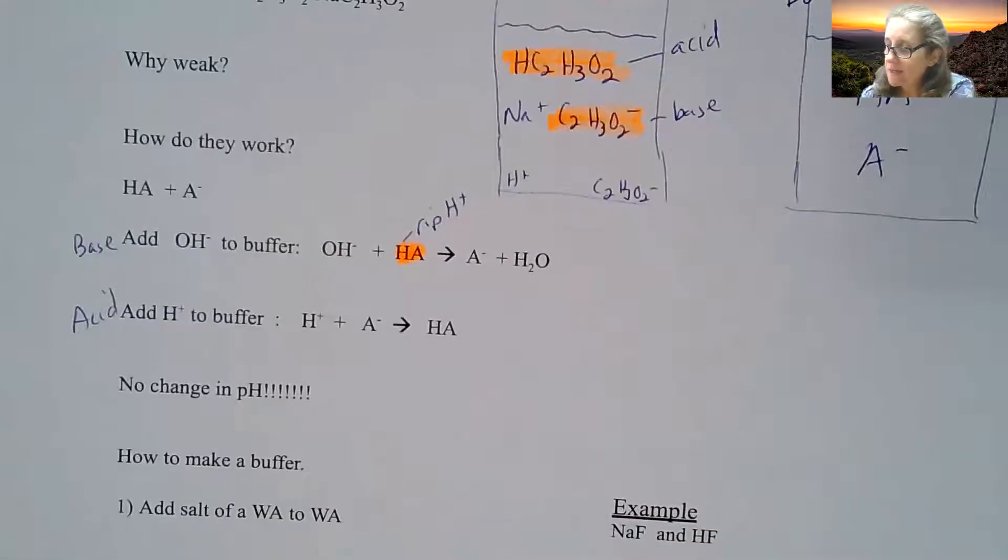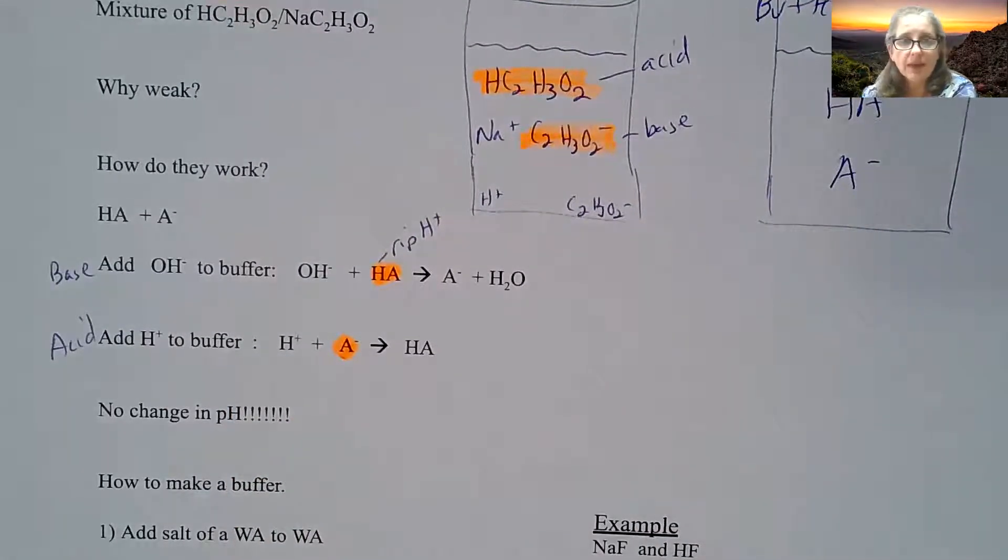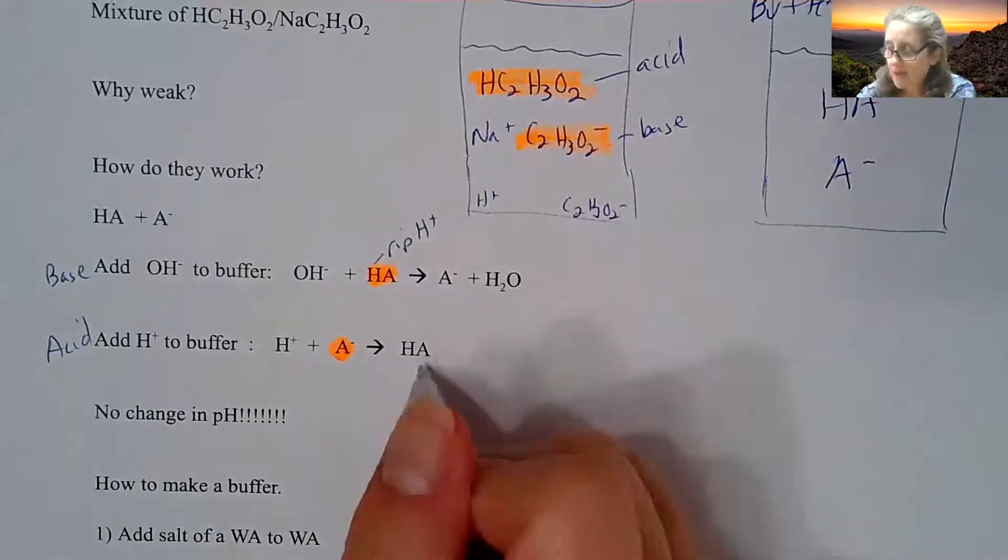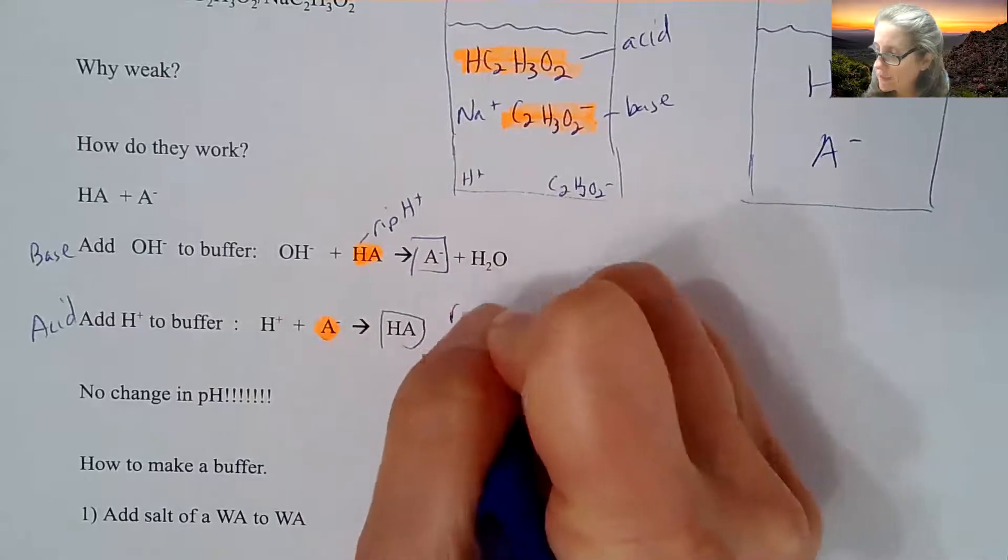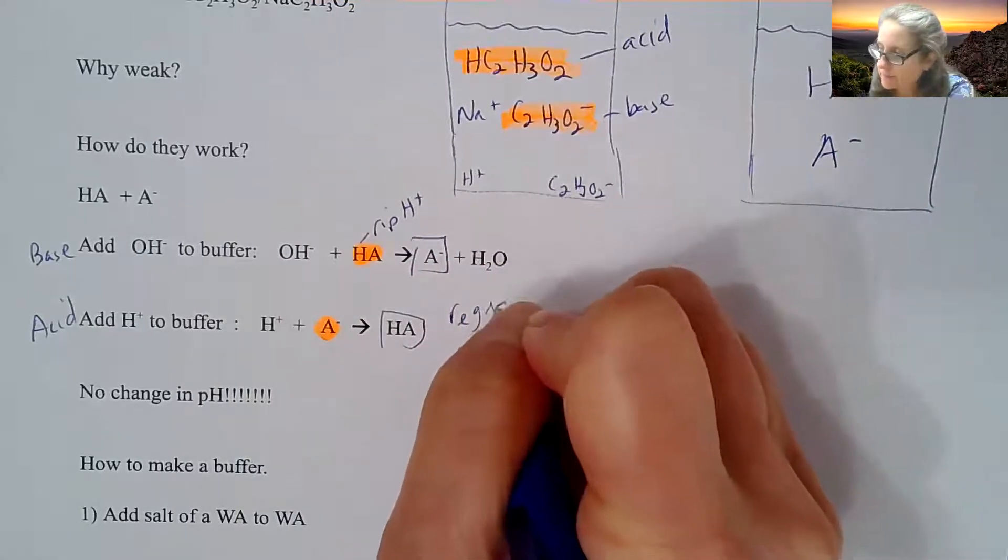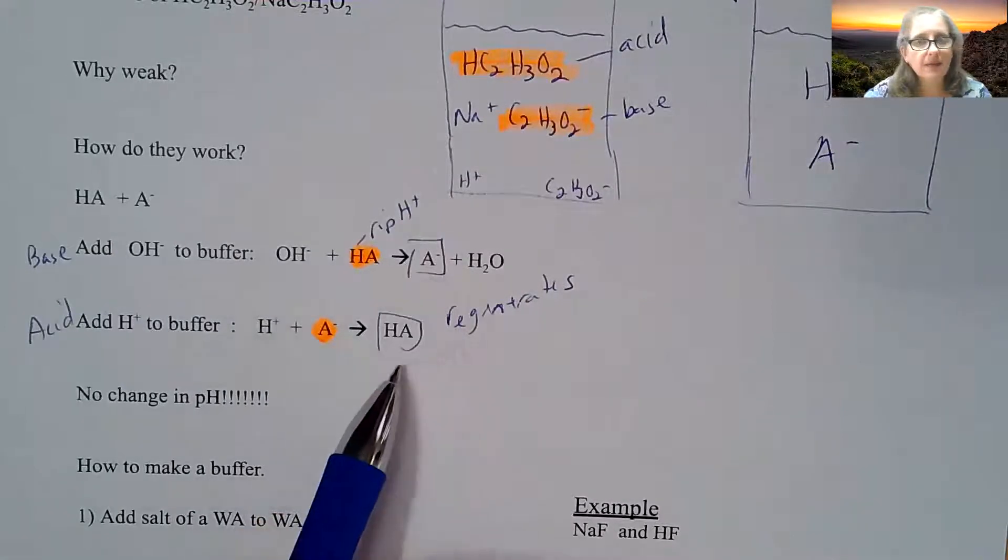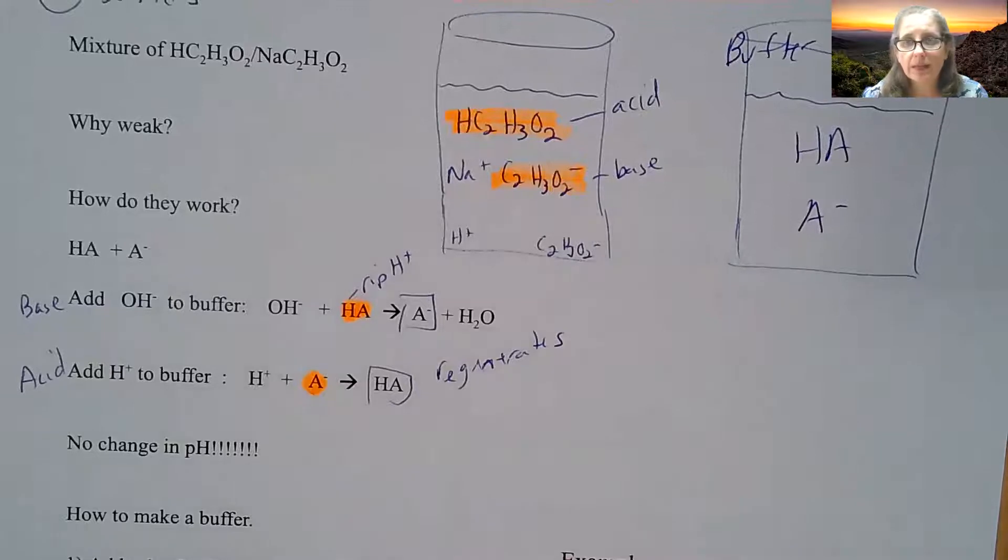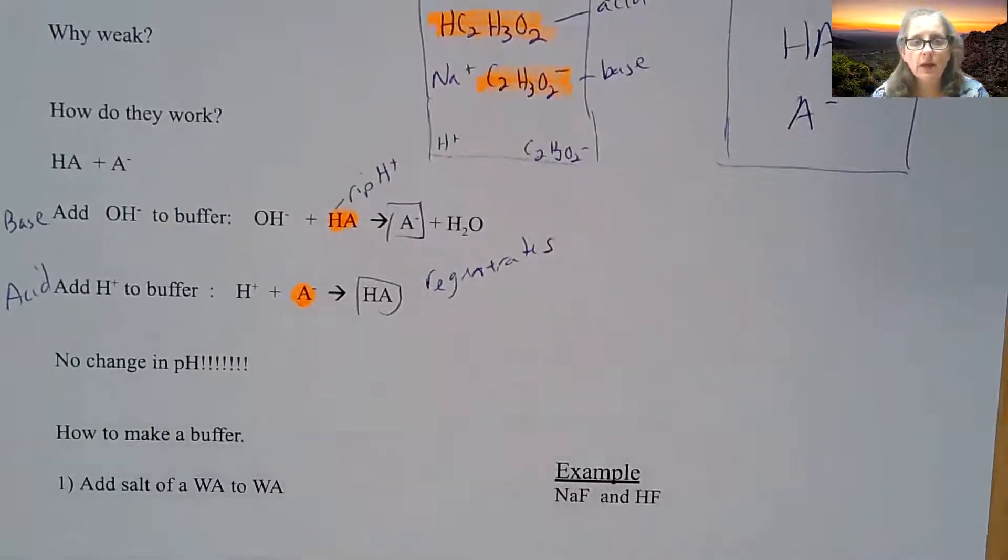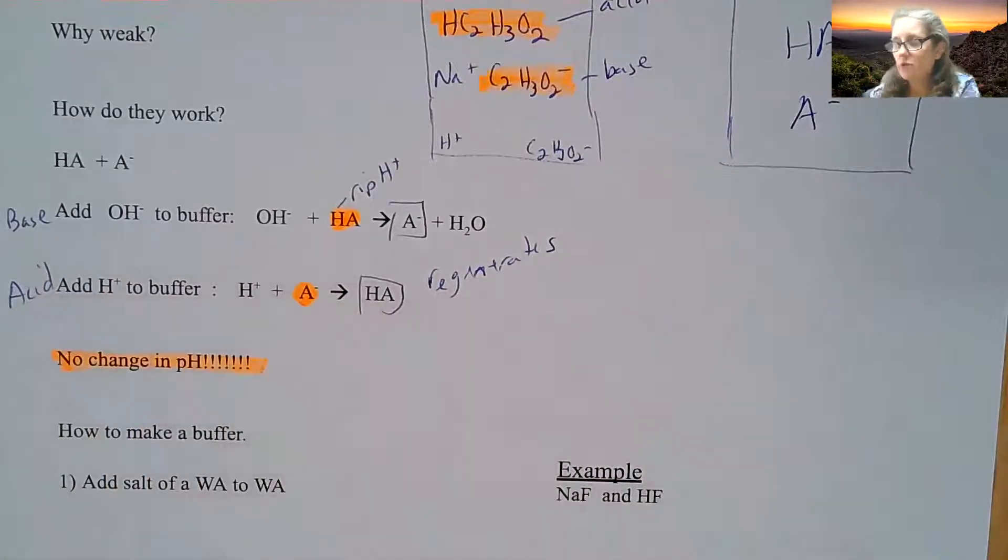Likewise here, the A- is going to suck up that H+ to make more HA. But what's cool about a buffer is it regenerates itself because you make more A- and more HA, which are the two components you have normally in that buffer. That is why buffers are so amazing because they don't change in pH when you add base or acid to it.